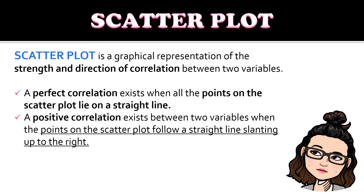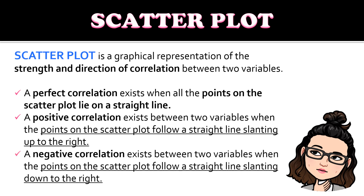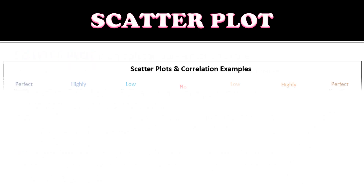For positive correlation, it exists between two variables when the points on the scatterplot follow a straight line slanting up to the right — it goes to the right and it goes up. Unlike negative correlation, which also goes to the right but the direction is going down.